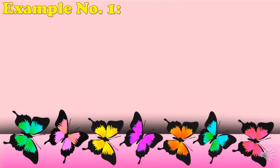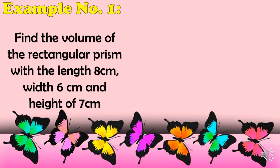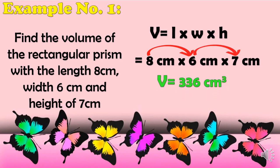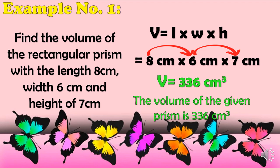Example number 1: Find the volume of the rectangular prism with a length of 8 cm, width of 6 cm, and height of 7 cm. Using the formula V = L × W × H, substituting: 8 cm × 6 cm × 7 cm. Multiplying 8 × 6 × 7 gives us a volume of 336 cm³. Therefore, the volume of the given prism is 336 cm³.